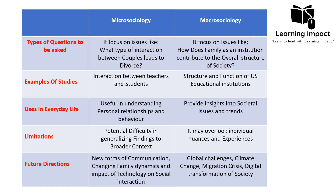Regarding future directions — the evolving research areas in micro and macro sociology — for micro sociology these include new forms of communication, changing family dynamics, and the impact of technology on social interaction in the modern age. For macro sociology, future research directions include global challenges such as climate change, migration crises, and the digital transformation of society.